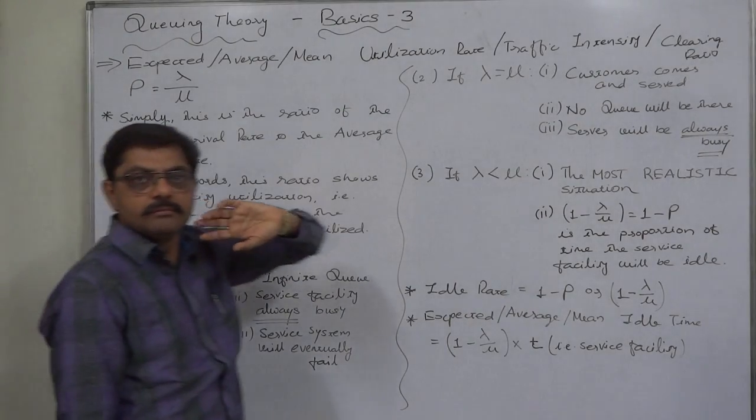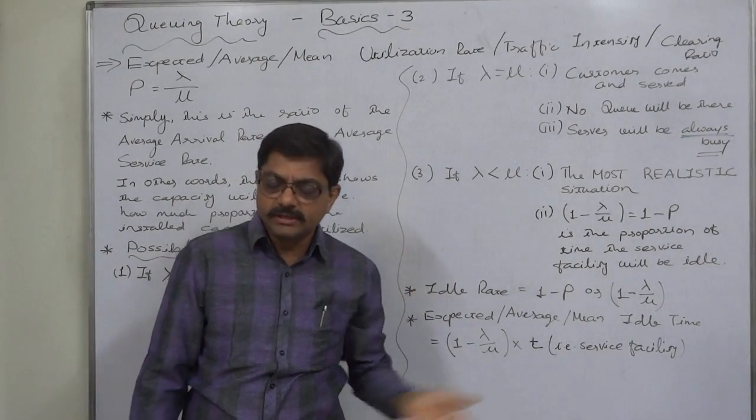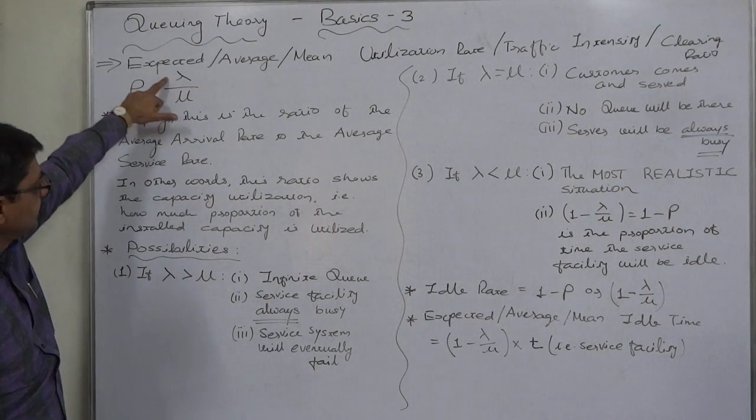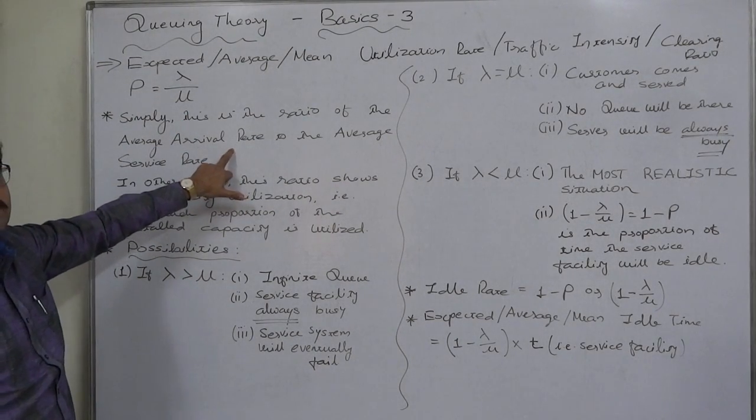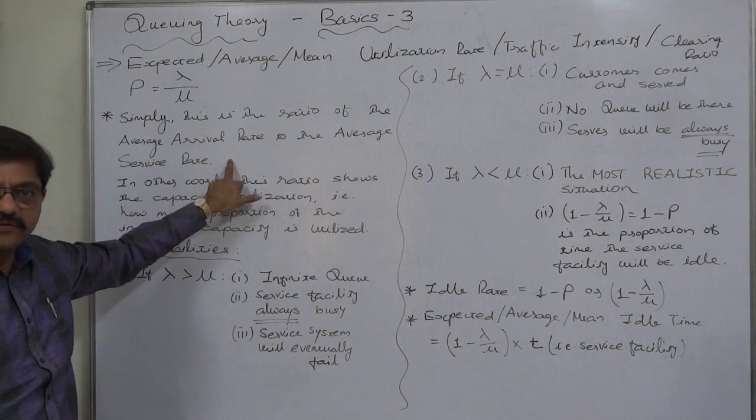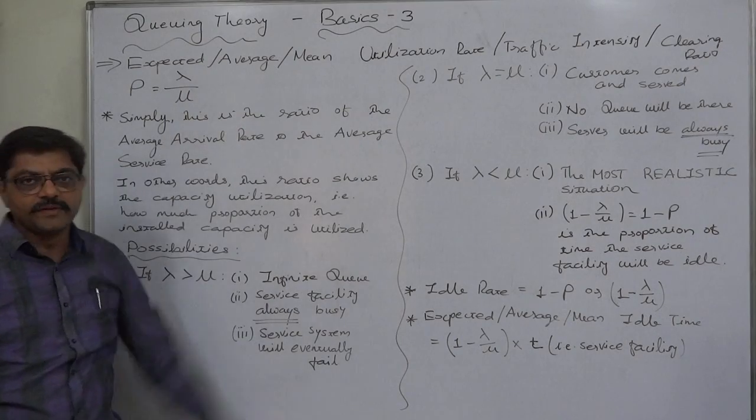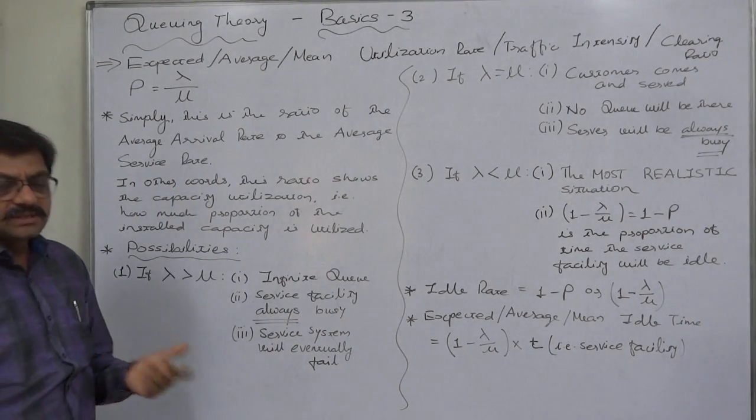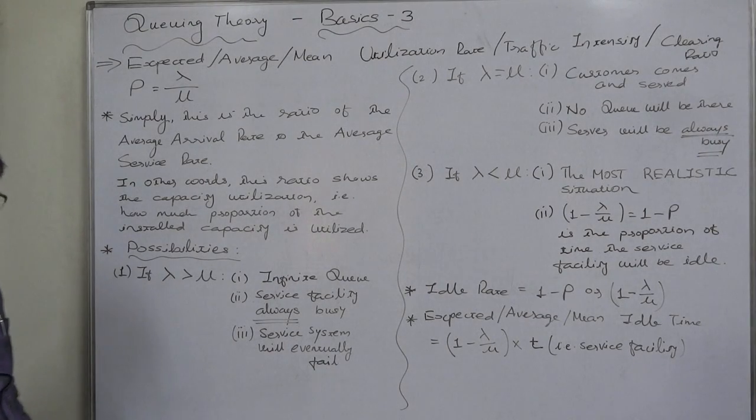If we recall the previous two lectures or examples, lambda the average arrival rate was 12 and mu the average service rate was 15. So 12 divided by 15 comes to 0.8 or if we convert to percentage it is 80 percent.